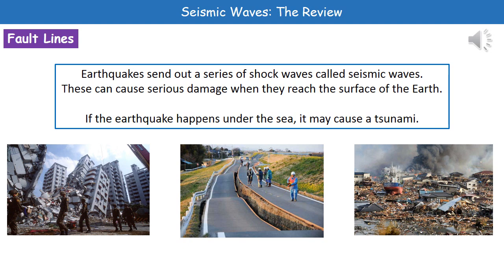When an earthquake occurs we get shockwaves being sent out called seismic waves. These seismic waves can cause some pretty serious damage when they reach the surface of the Earth. In the images at the bottom you can see on the far left hand side the effect on buildings — they can be completely toppled.